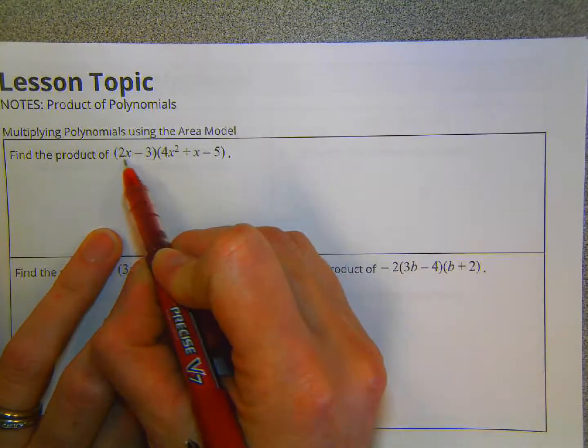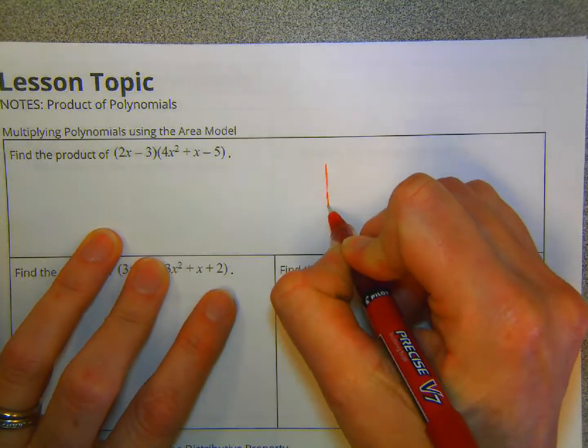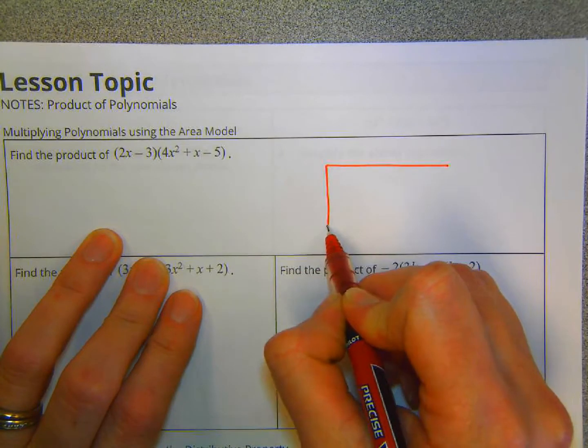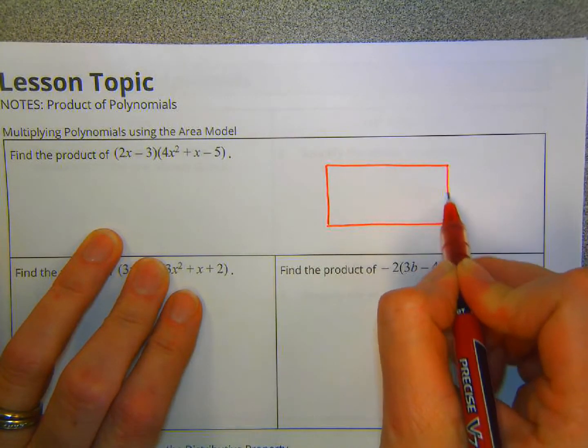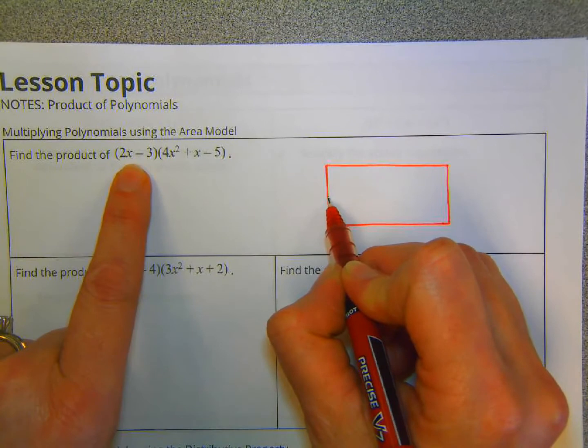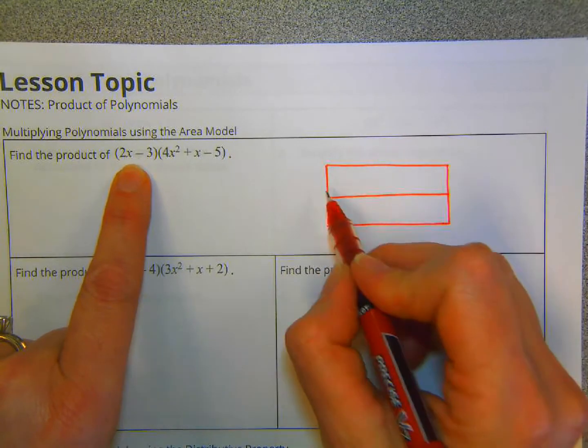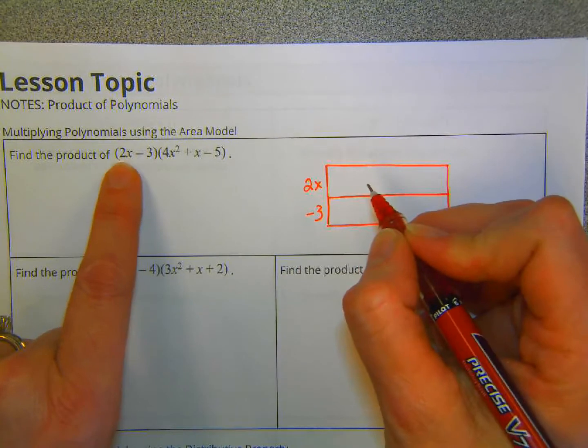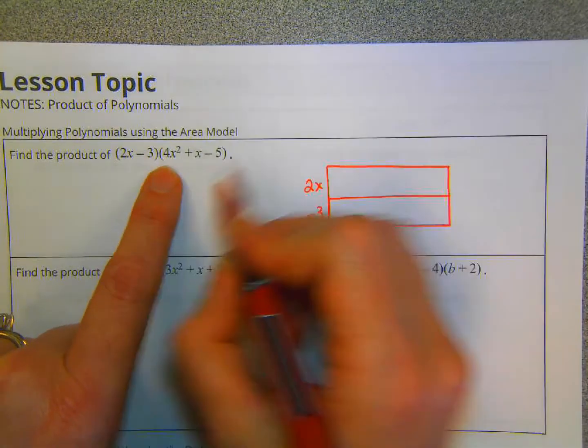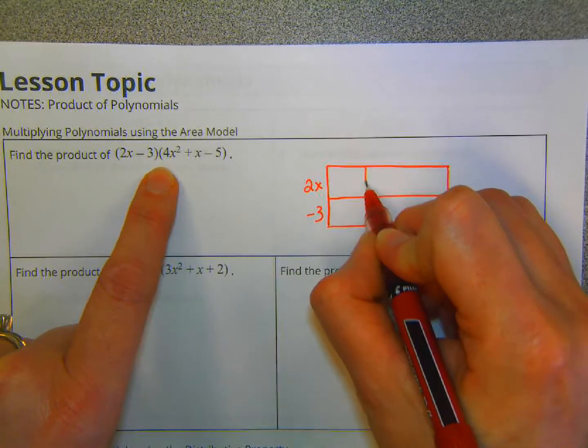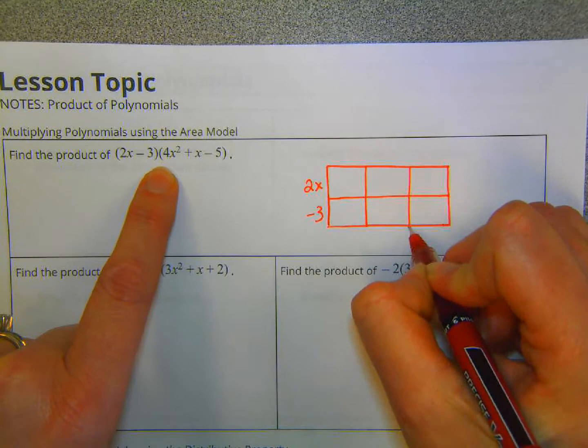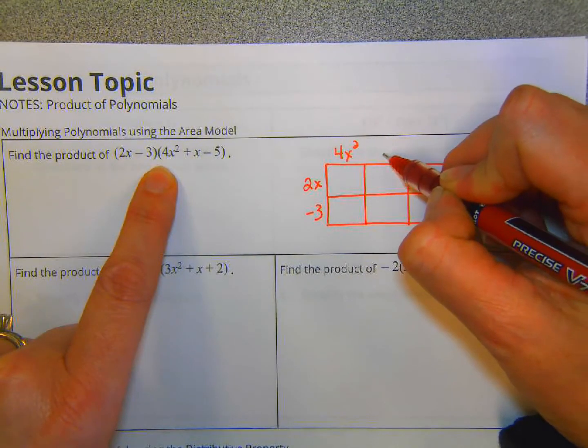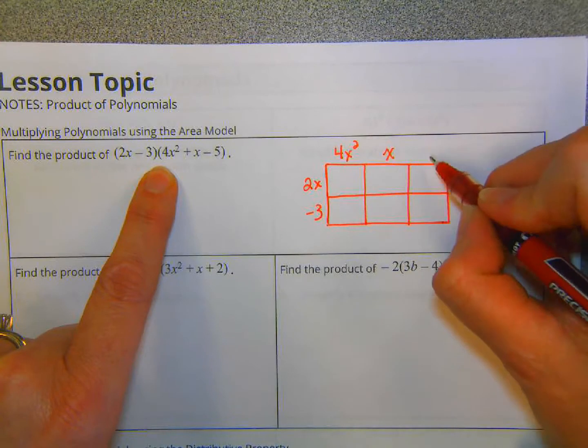So this is a binomial. We have two terms here. So we want to make a rectangle, and we want one of the sides to be broken down into two parts. That would be the shorter side. We've got two parts there. We're going to call this part 2x and this part negative 3. So we've got 2x minus 3. This is a trinomial, so we're going to break this other part of the box, the other side of the box, into three parts. So we've got 4x squared plus x, 1x, minus 5.